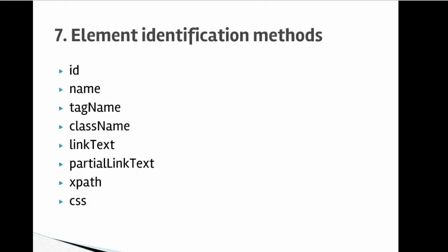Welcome to lecture number 7: Element Identification Methods in Selenium WebDriver in Java. In this lecture, you will learn how to identify elements on a given web page using various location strategies or element locators like id, name, tag name, class name, link text, partial link text, XPath, and CSS. Note that link text and partial link text are used to identify only links and nothing else.